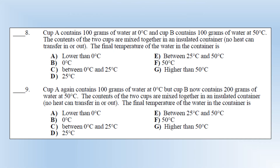Cup A contains 100 grams of water at 0 degrees, cup B contains 100 grams of water at 50 degrees. We mix the two together in an insulated container so no heat can transfer in or out. Using Q = mcΔT, one material is losing heat energy and the other is gaining, and they'll meet where they've lost and gained equal amounts. With the same mass and same specific heat capacity, they're going to meet in the middle at 25 degrees.